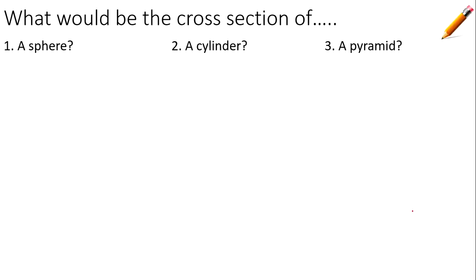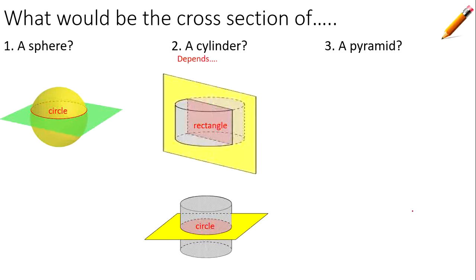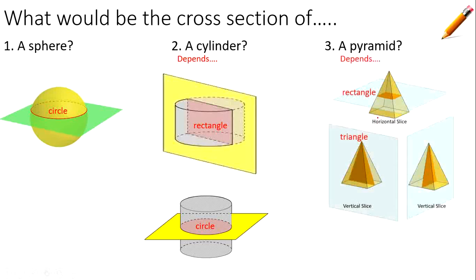What would be the cross section of a sphere? A circle. How about a cylinder? It depends: a vertical cut gives a rectangle, and a horizontal cut gives a circle. What about a pyramid? A horizontal slice gives a rectangle or square depending on the base, and a vertical slice gives some sort of triangle.